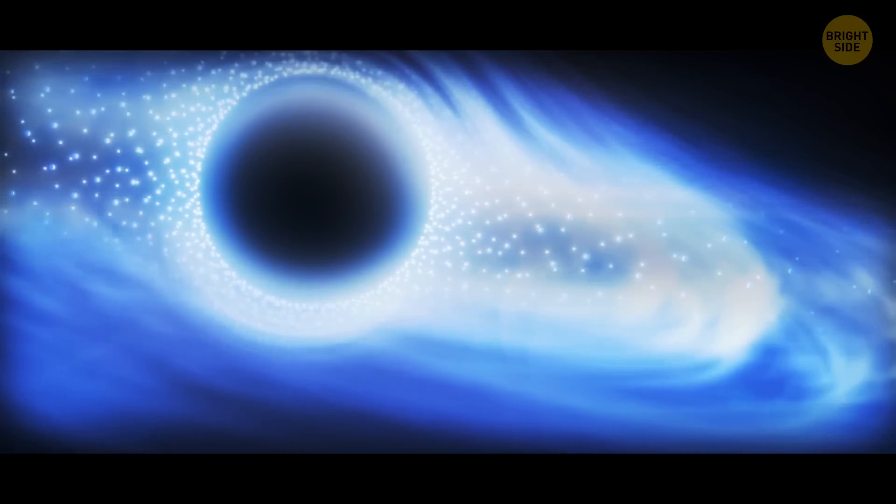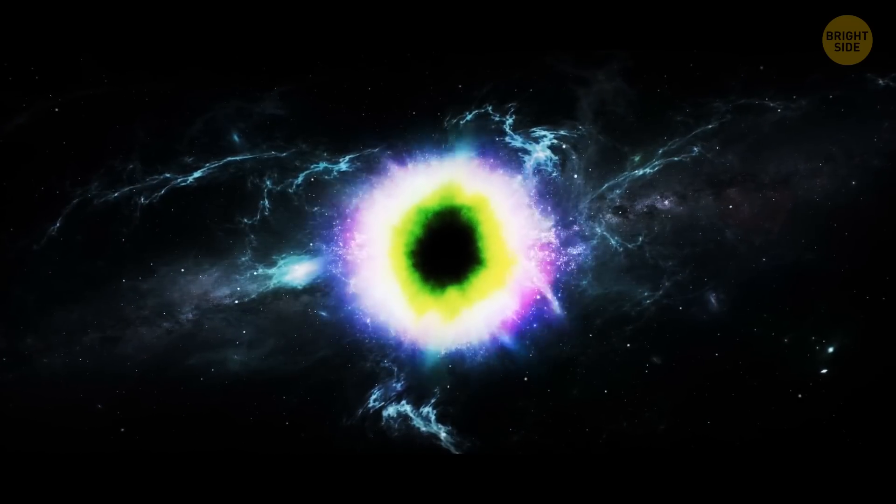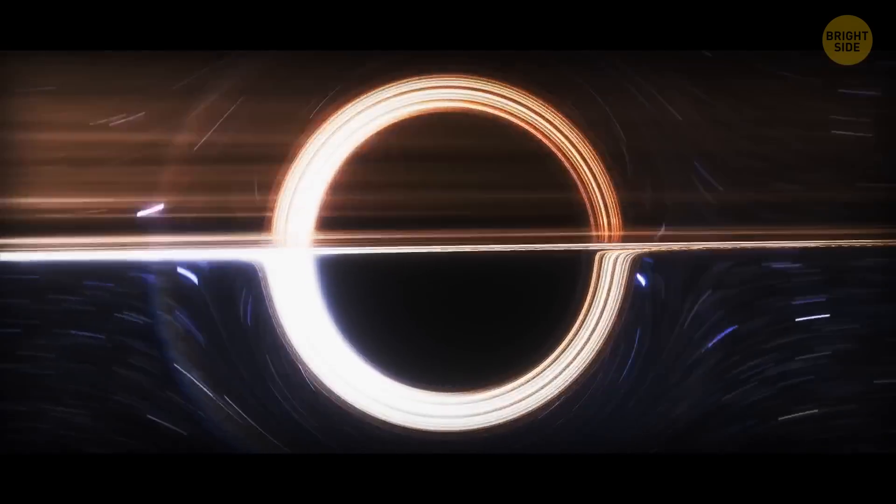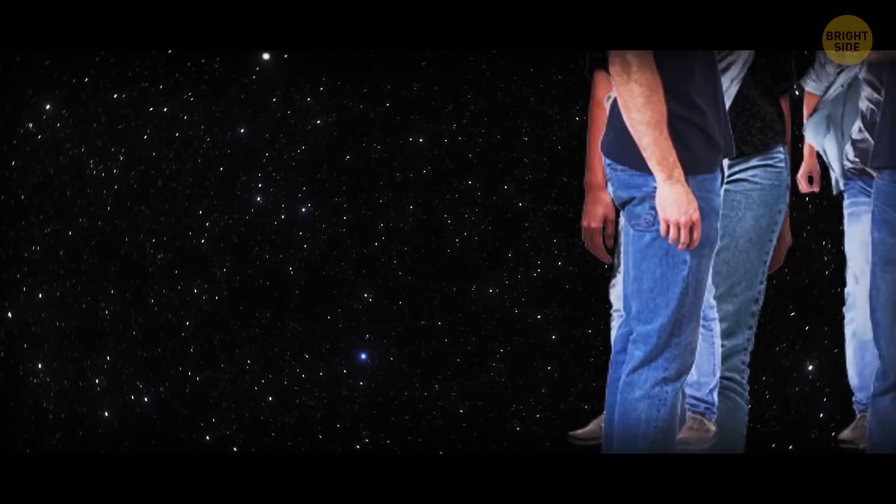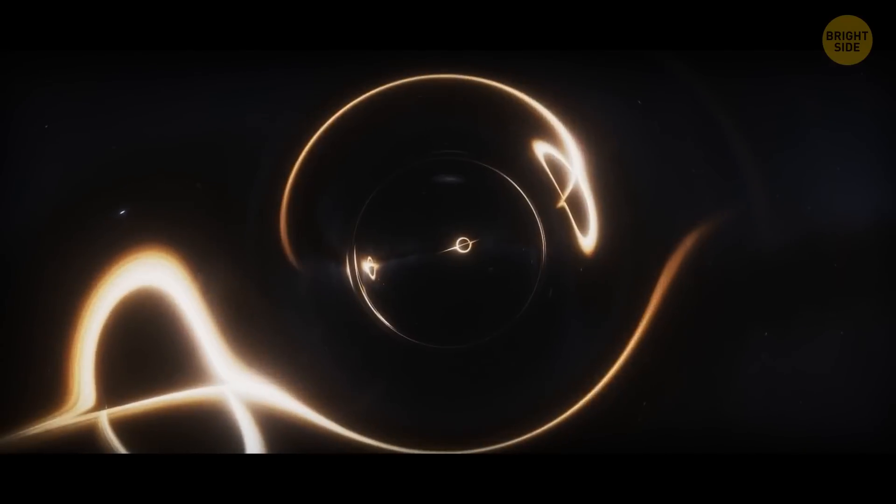As with snowflakes, every black hole is unique. Each one has its own mass, spin, and charge. And they also come in different sizes, sort of like jeans. Petite, slim, regular, and husky, or something. Anyway, there are four sizes.